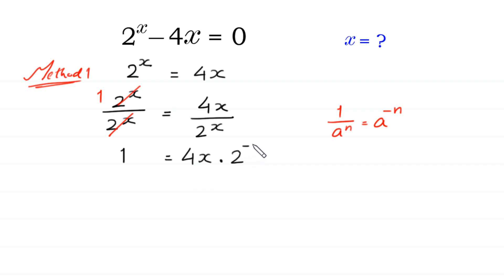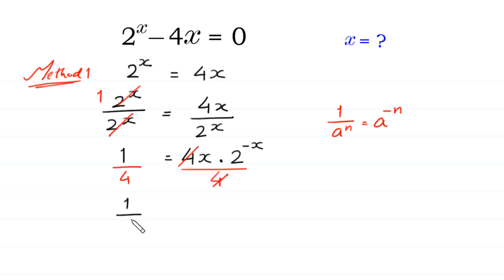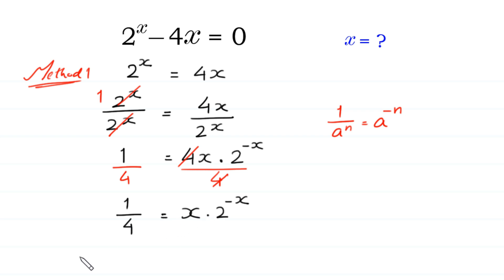Now we divide both sides by 4. The 4 cancels and we get 1 over 4 equals x times 2 to the power negative x. We rewrite this with x times 2^(negative x) on the left side, equal to 1 over 4 on the right side.